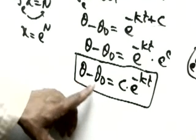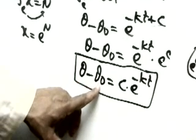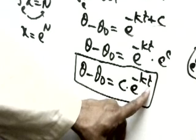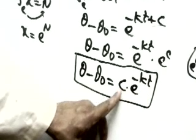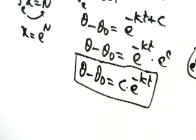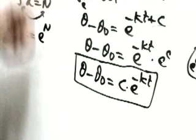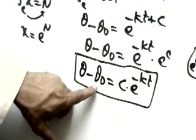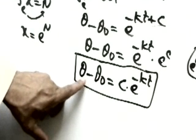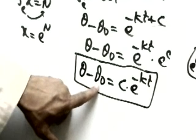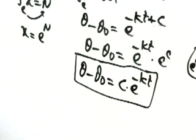To summarize: θ is the temperature of the body, θ₀ is the temperature of the surroundings, t is time, and C and k are constants. In the questions, we will directly use the formula θ − θ₀ = C·e^(−kt) without re-deriving it each time.